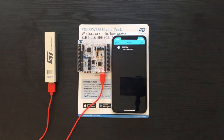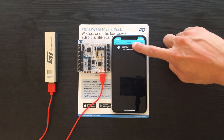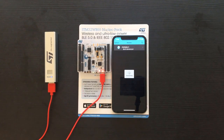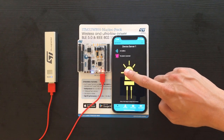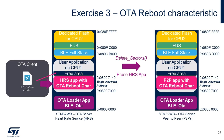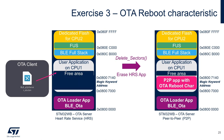I'll send a P2P server OTA example this time. You have now replaced the firmware. Let's see whether the user application is working. To summarize: due to the OTA reboot characteristic, a reset was triggered to run the OTA loader. The OTA loader deleted the existing heart rate OTA example. The new P2P server OTA example was transferred into the free area of the flash memory, and after this transmission, the P2P server OTA example was executed.